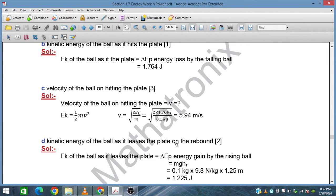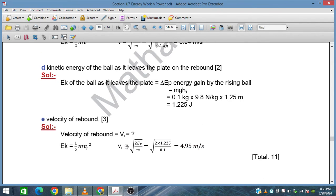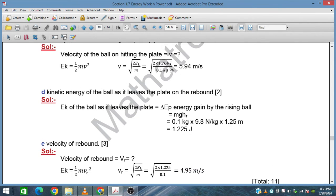The energy of the ball as it leaves the plate on the rebound: On the rebound, the height is only 1.25 meters, so the energy is 1.225 joules and the velocity is also a little less at 4.9 meters per second.